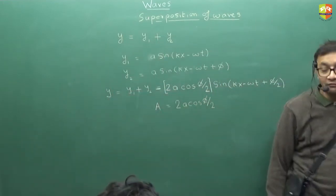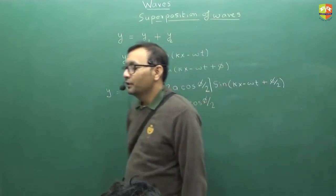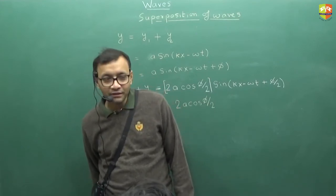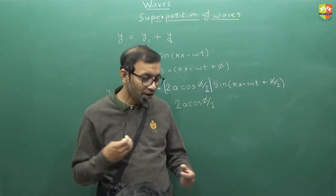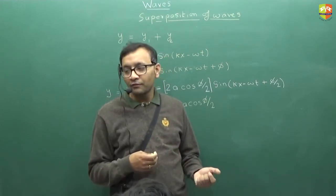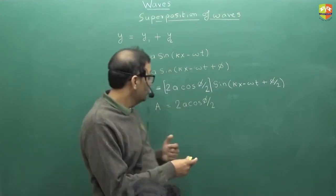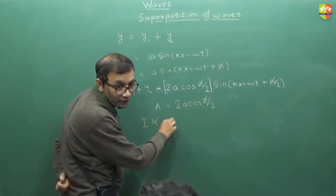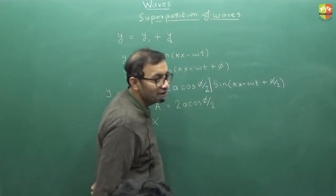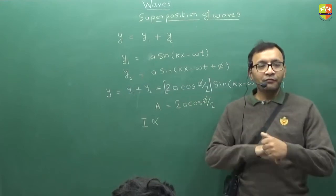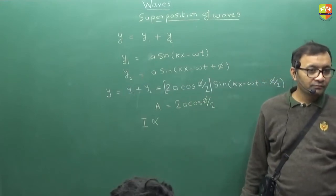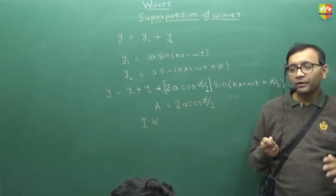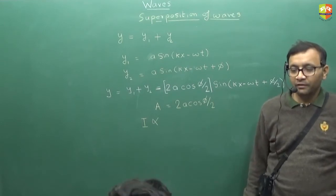So when two waves like this meet, it will create a third wave of what amplitude? 2a cos(φ/2). And when it comes to the wave, when we talk about the energy contained in the wave, we talk about intensity. Intensity is a better representation of energy in terms of the wave because there is a continuous transmission of energy. So it is better to talk in terms of power delivered per unit area. So intensity, do you know, proportional to what? Amplitude square.